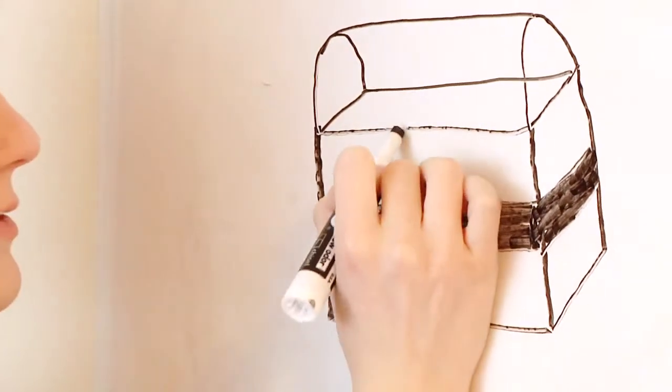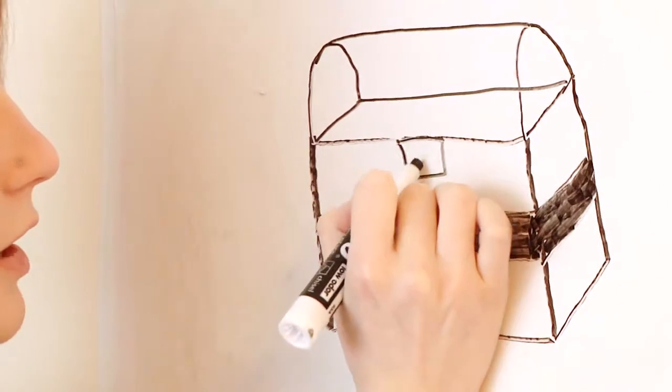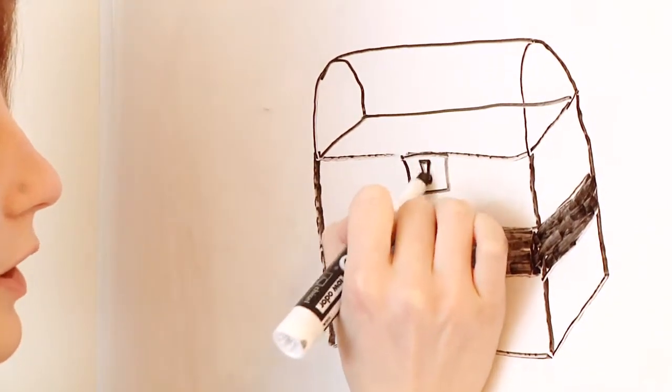Now to draw the lock, all you have to do is draw a little square with a keyhole in it.